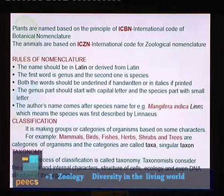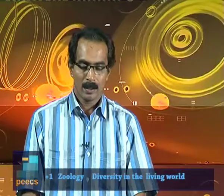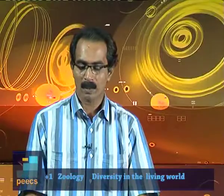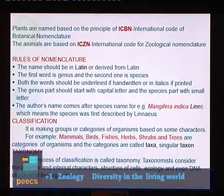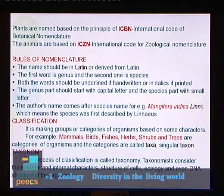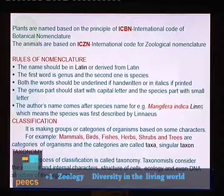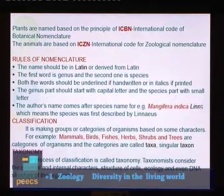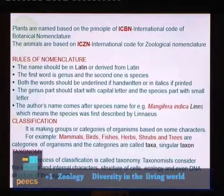Classification means making groups or categories of organisms based on some characters. For example, we can classify animals into groups: mammals, birds, fishes, herbs, shrubs, and trees. These are categories, and the categories are called taxa — for example, mammals, birds, fishes are taxa. The singular form is taxon, so mammals is a taxon.